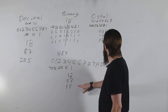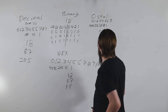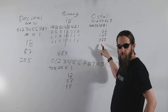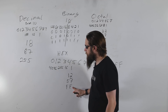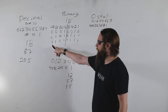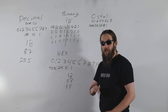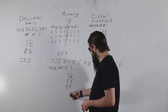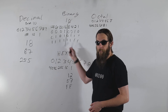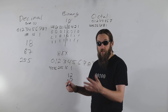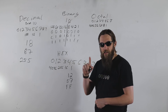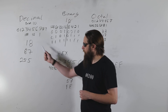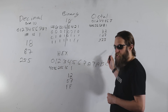Hex is the most efficient of these systems — you need only two characters to display what takes three in octal or eight in binary. Every single hex digit is four bits, so two hex digits equals one byte. If you look at a large string of hex digits, every two digits is one byte of information.